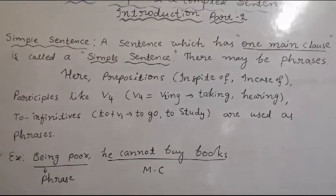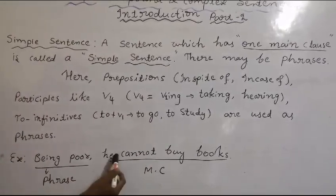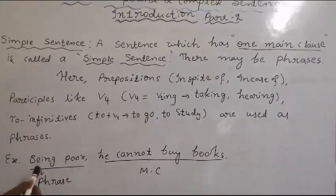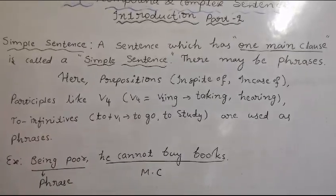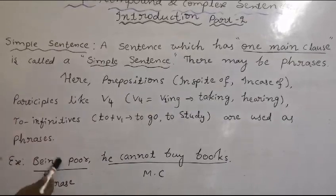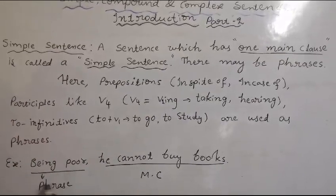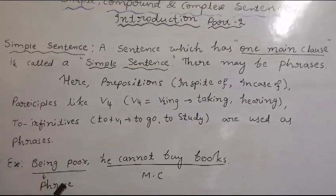Here is an example: 'Being poor, he can't buy books.' 'Being' is a phrase - we will learn more phrases in later classes. 'Being poor' is the phrase part. Because he is poor, he cannot buy books.